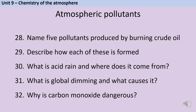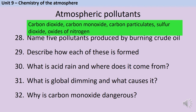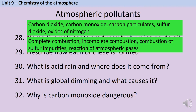When we burn crude oil or other fuels derived from crude oil, this can release carbon dioxide, carbon monoxide, carbon particulates, sulphur dioxide, or various oxides of nitrogen. The carbon dioxide comes from the complete combustion of fuels that contain carbon, where there is enough oxygen. Carbon monoxide and carbon particulates come from incomplete combustion of those fuels, where there is less oxygen available, so the products have less oxygen in them as well.